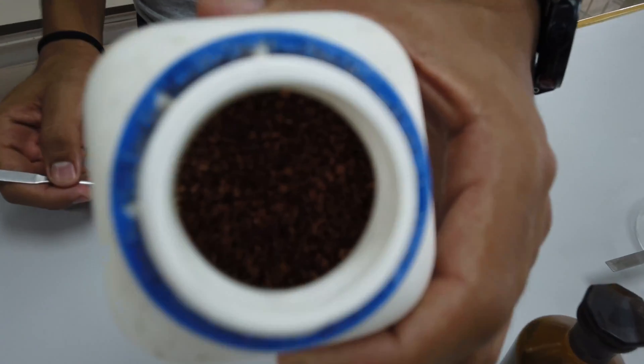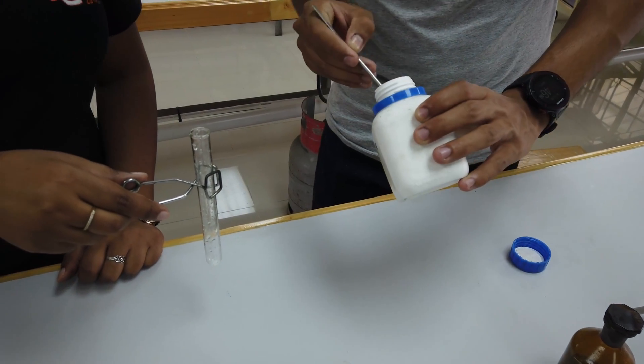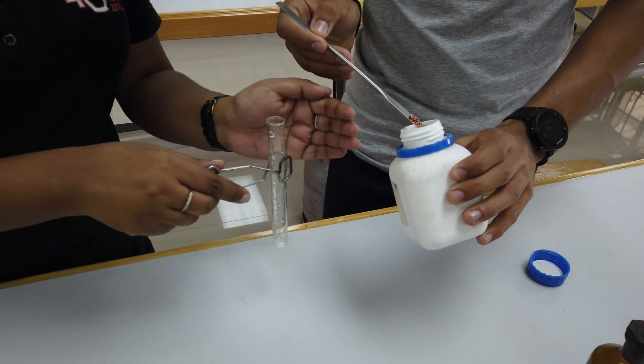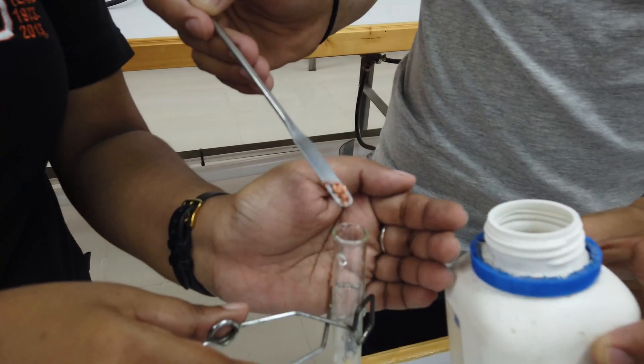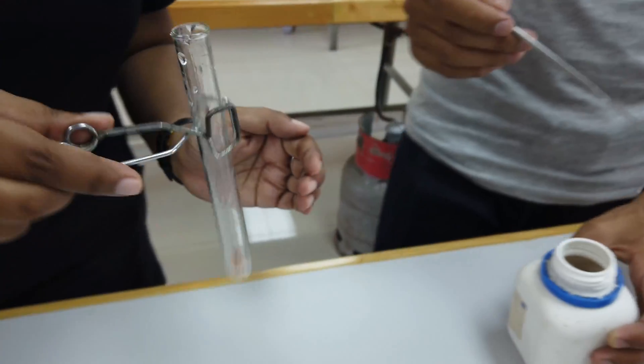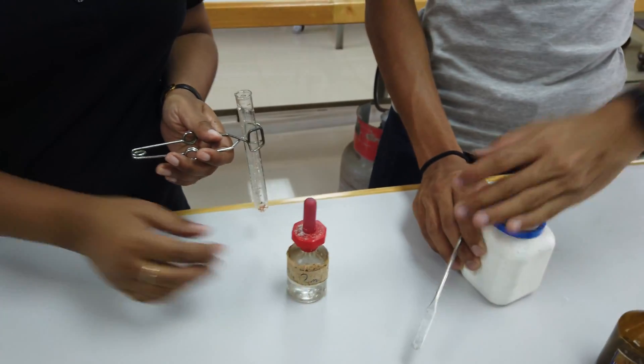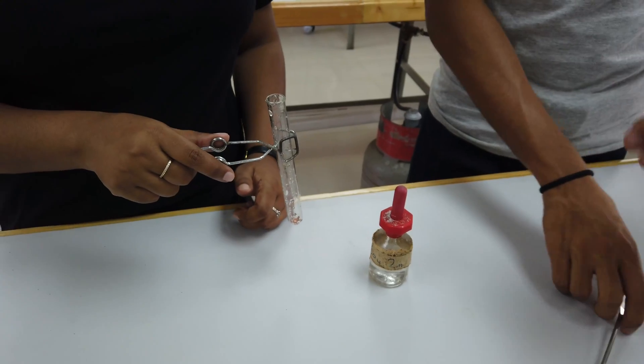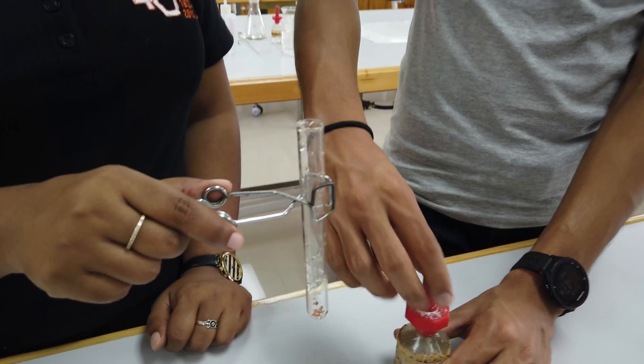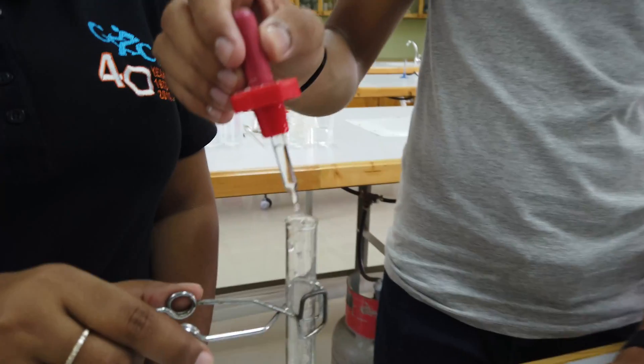We're taking just a little bit and putting it into the test tube. To this we're going to add about 10 drops of very concentrated sulfuric acid. Then we're going to heat this test tube on an open flame.